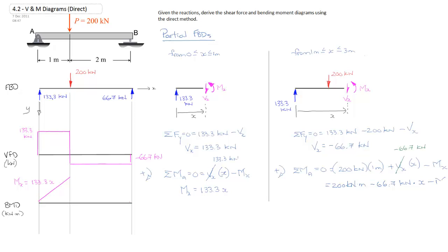Or rearranged m at x is equal to 200 kilonewtons meters minus 66.7 kilonewtons times x. So we'll go ahead and draw that in on our curve, and we can label it m at x is equal to 200 minus 66.7 x.